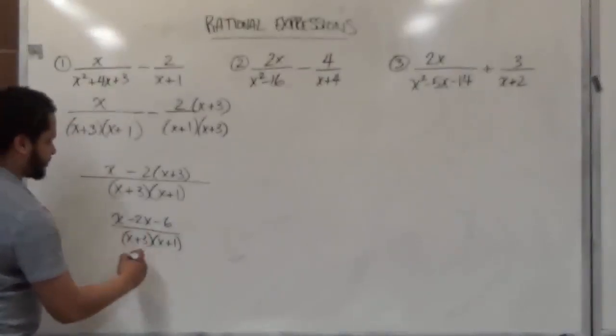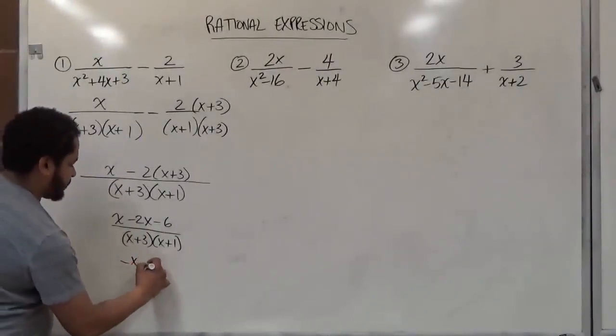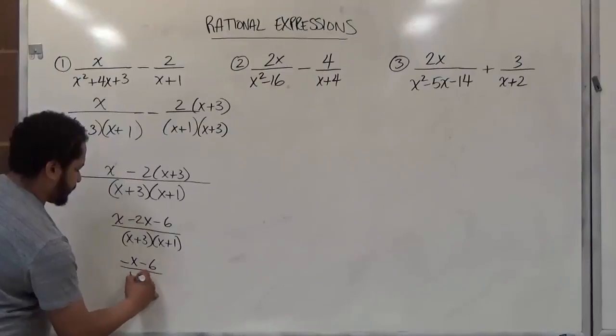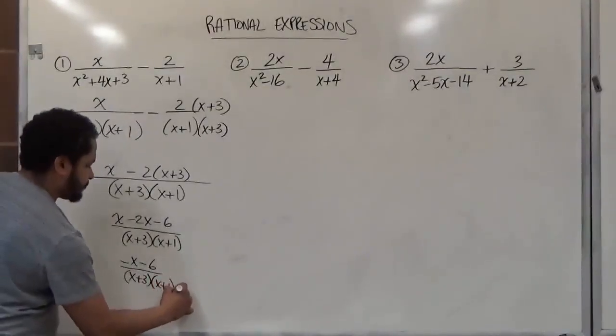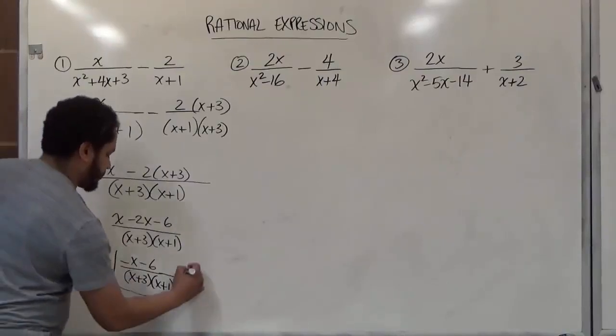And finally this becomes negative x minus six over x plus three times x plus one. That takes care of this first problem. Let's move on to the second problem here.